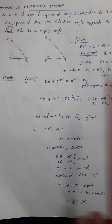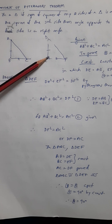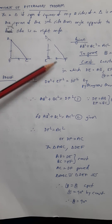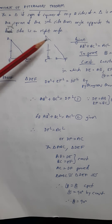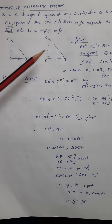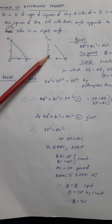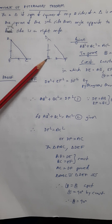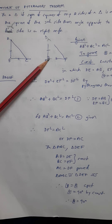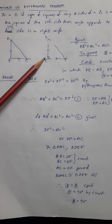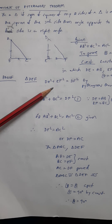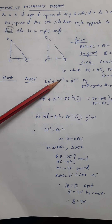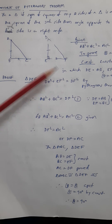For the construction, we draw a triangle DEF such that DE = AB, EF = BC, and angle E = 90 degrees. Since angle E is 90 degrees, by the Pythagoras theorem we can say that DE² + EF² = DF².